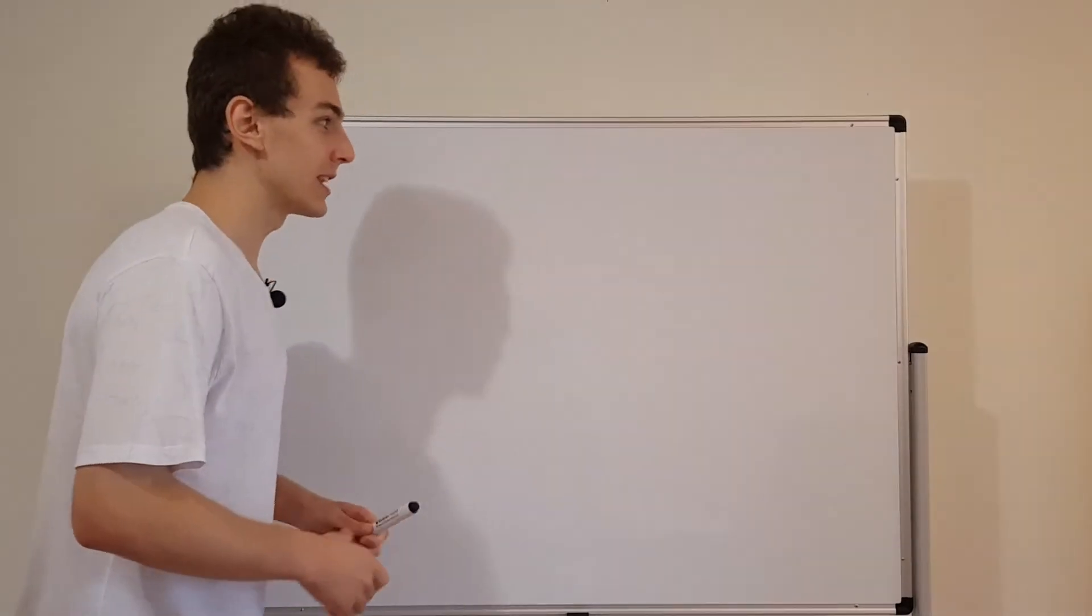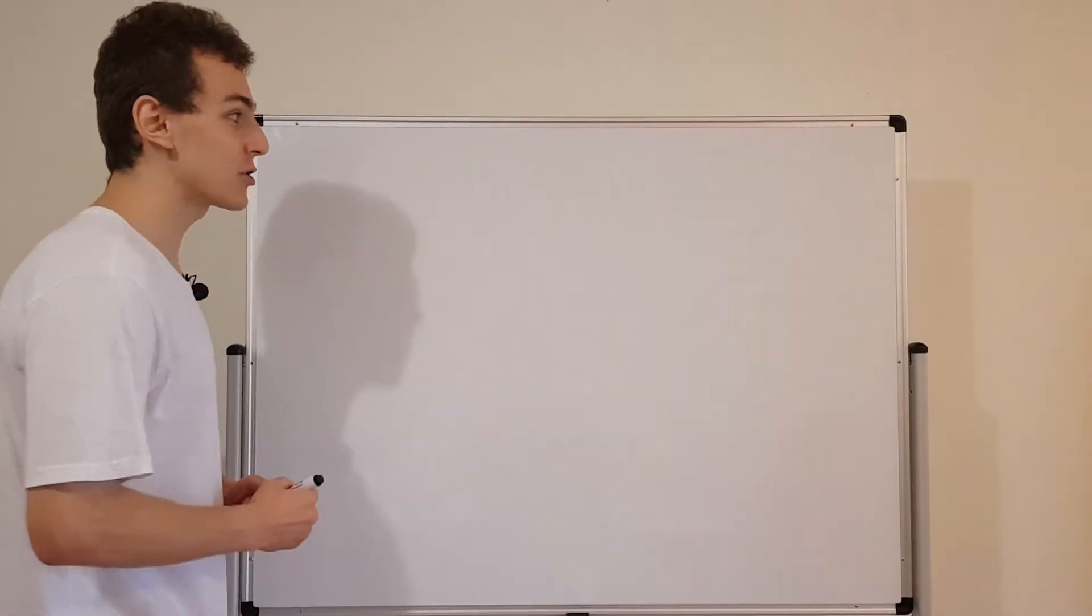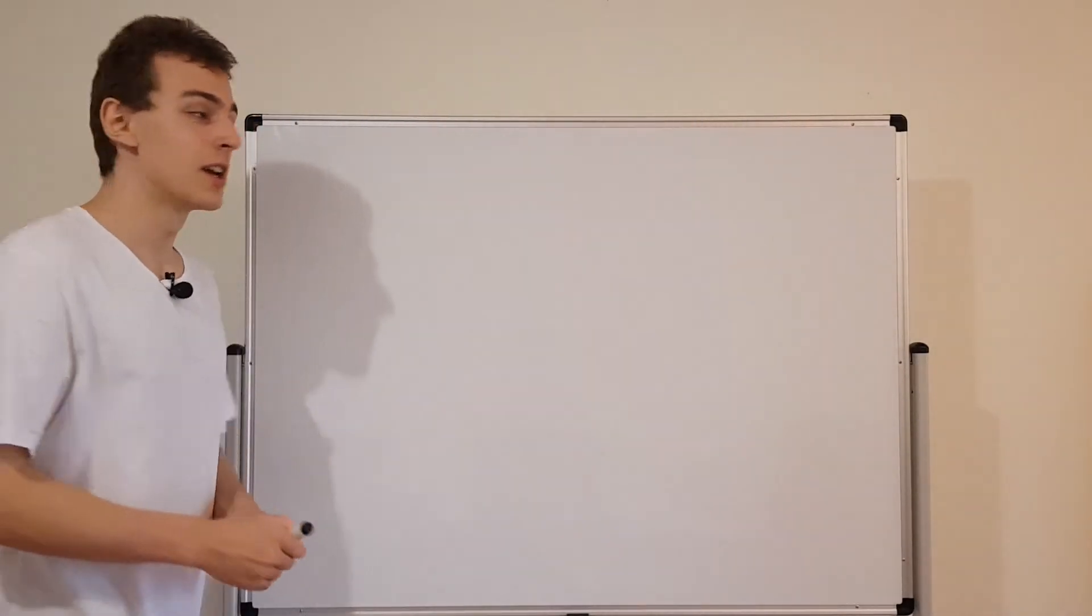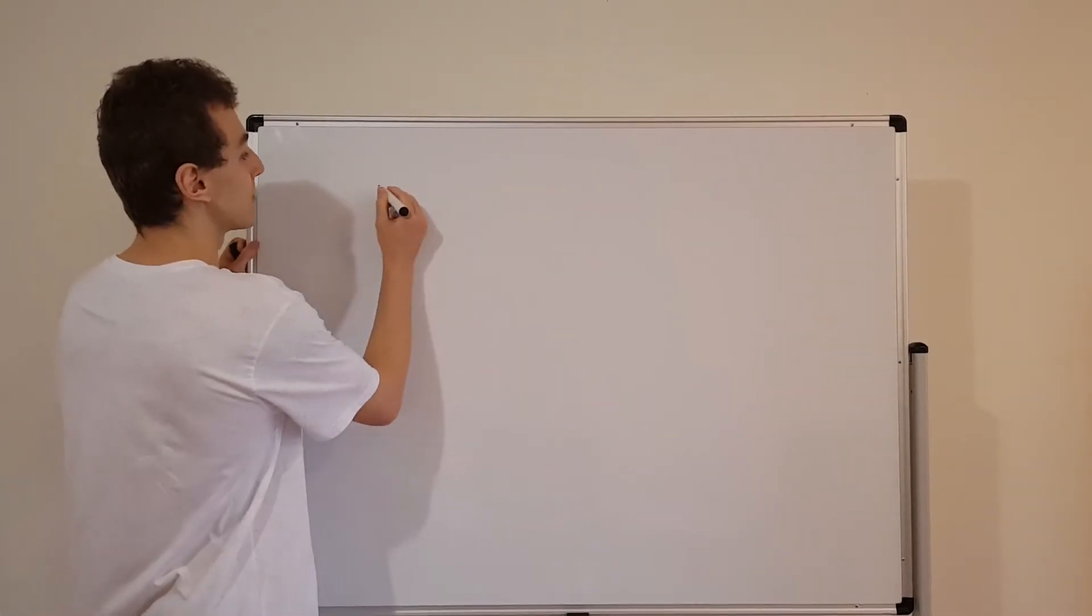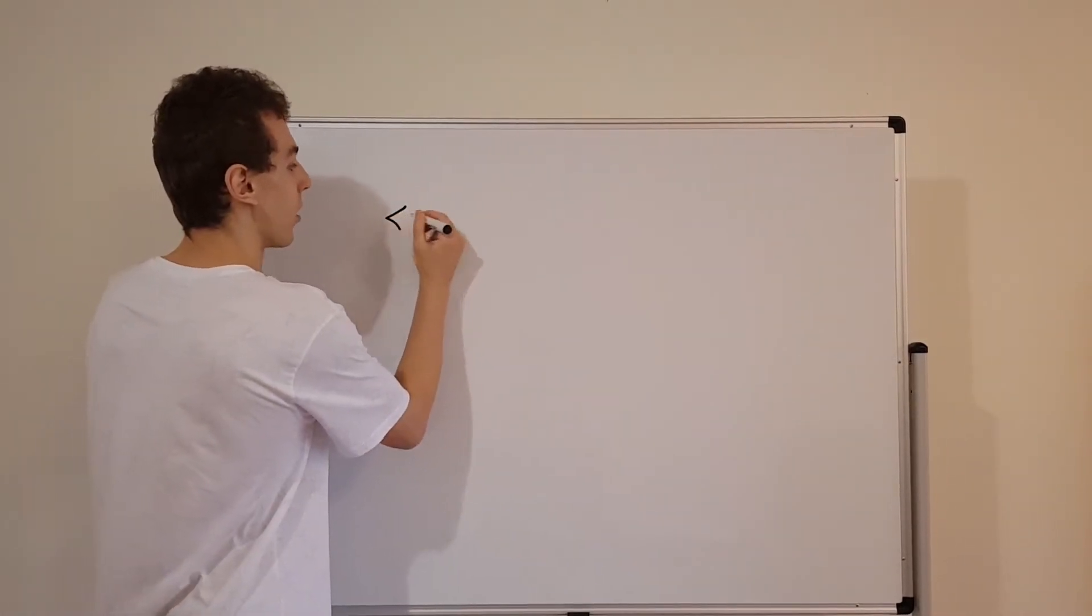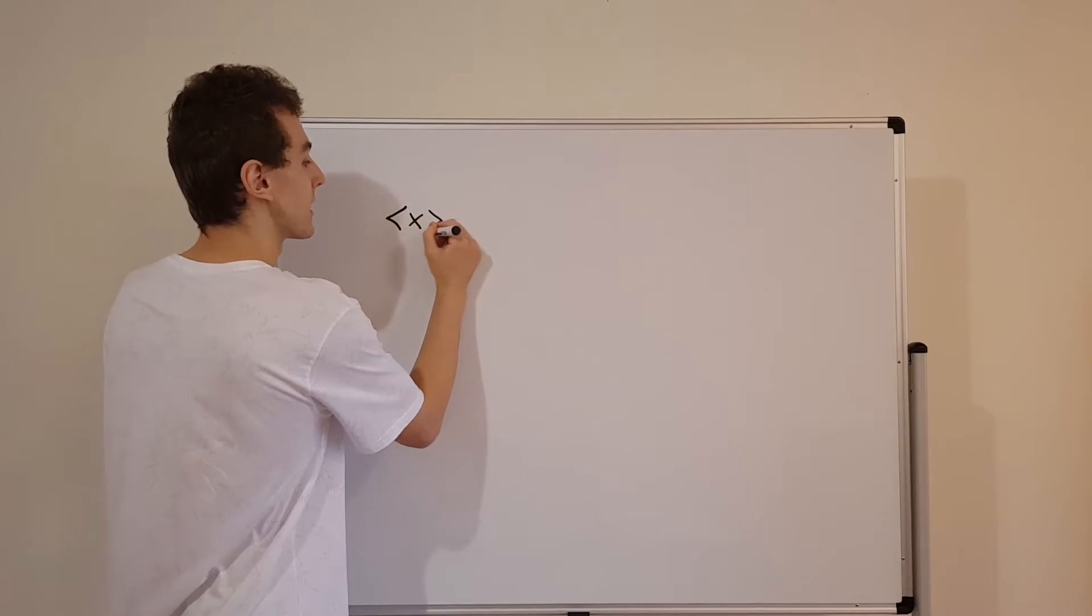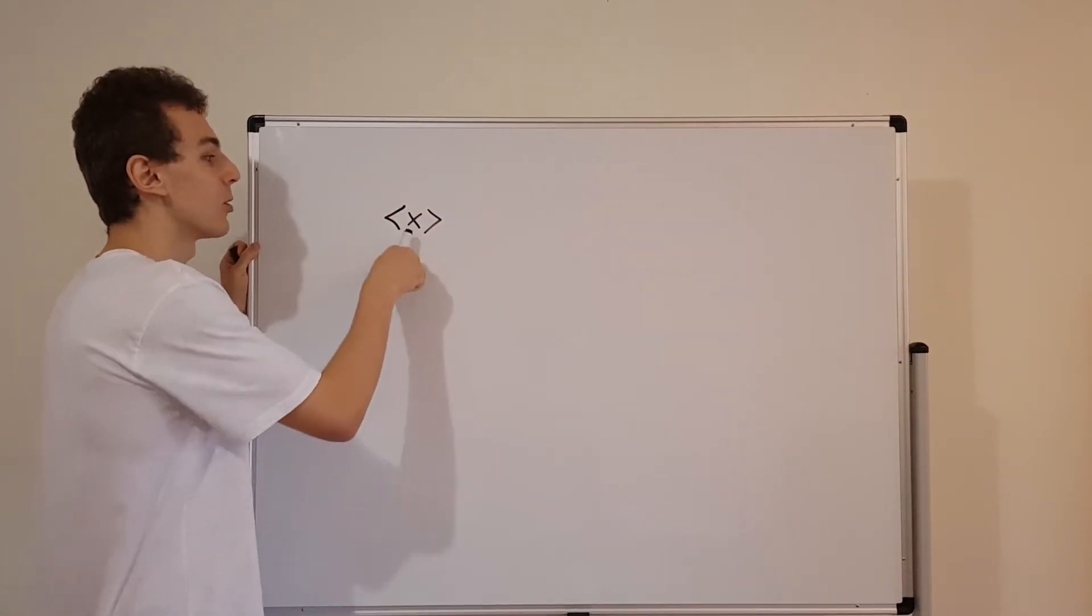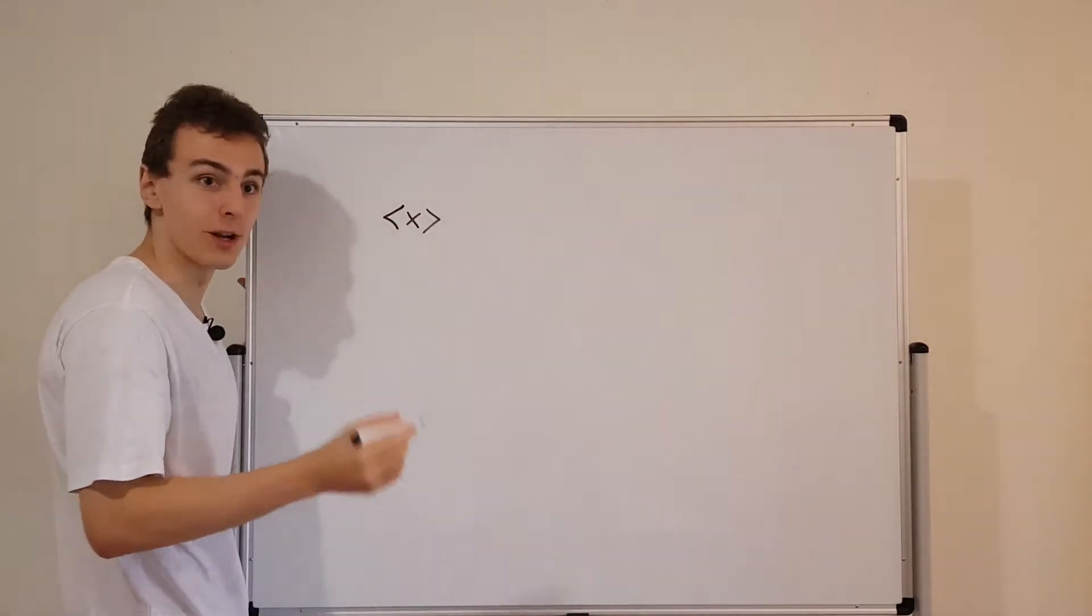First of all, let's have a recap of what we discovered in the past few videos of this playlist. We're going to have a look at the expectation values of x and p, so position and momentum. Let's have a look at position, because that's actually what we defined first. So the expectation value of x is written like this. We denote the expectation value of a variable by putting these little triangular brackets around them.